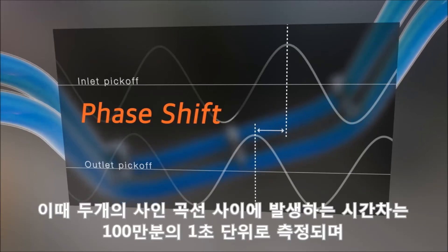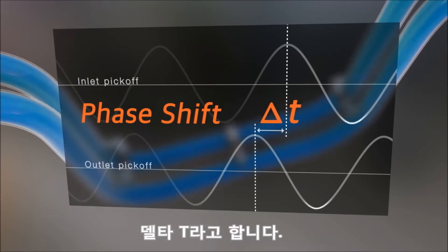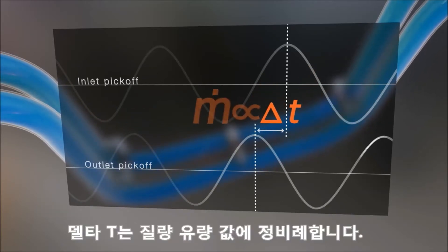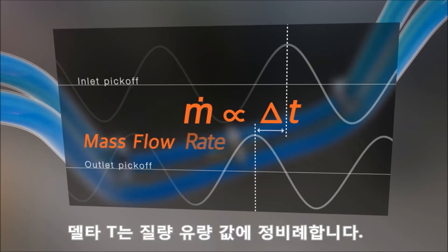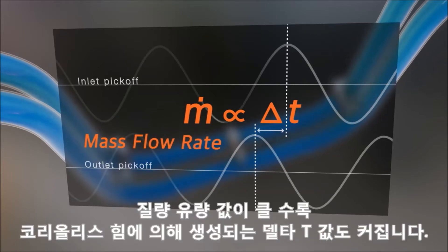The time delay between the two sine waves is measured in microseconds and is called Delta T. Delta T is directly proportional to the mass flow rate — the greater the Delta T created by the Coriolis force, the greater the mass flow rate.